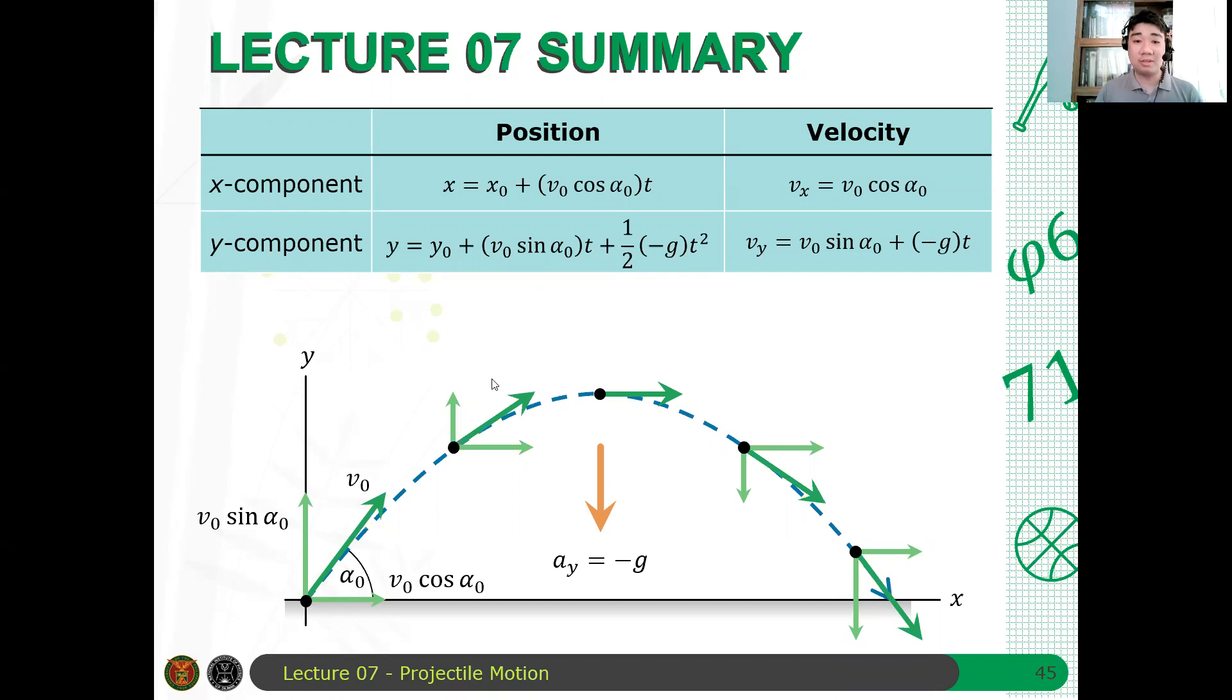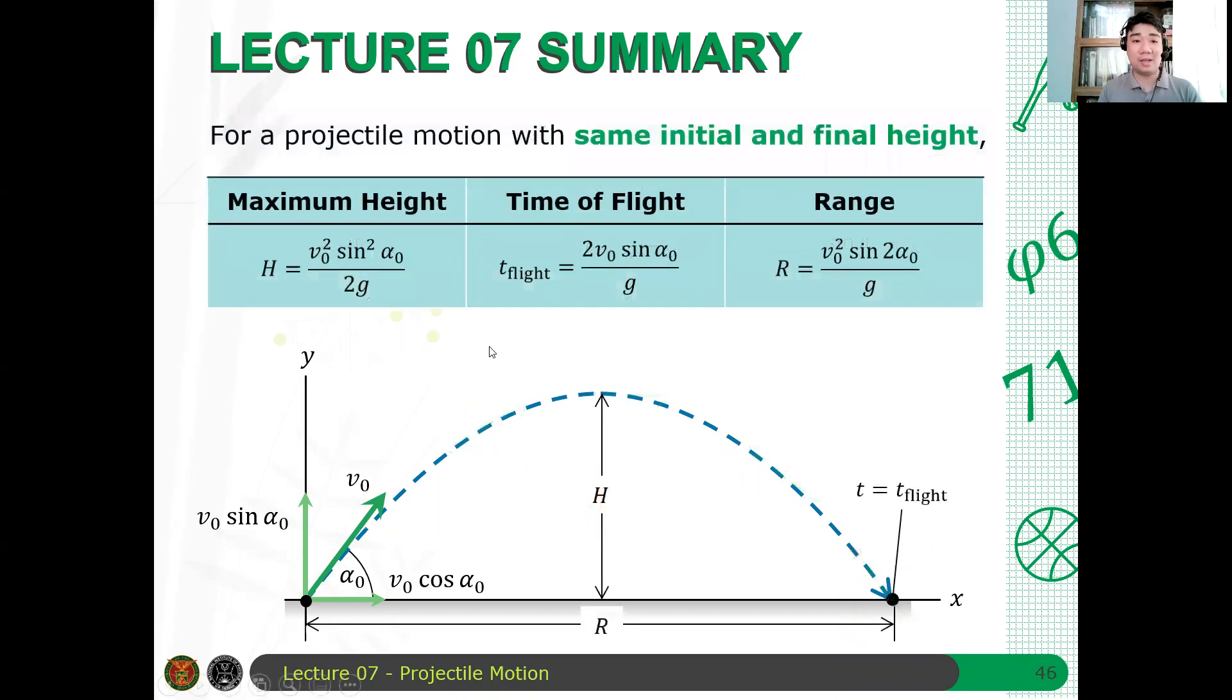And also you have three equations here. The x and y components are independent—you can analyze them separately. We have three equations that we want: the maximum height, the time of flight, and the range, with the assumption that the initial and final positions or final horizontal displacements are the same.